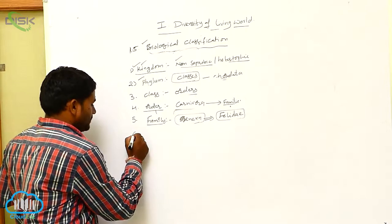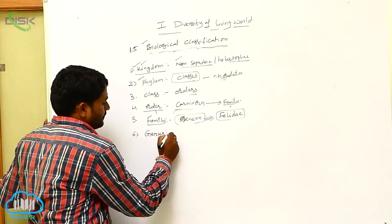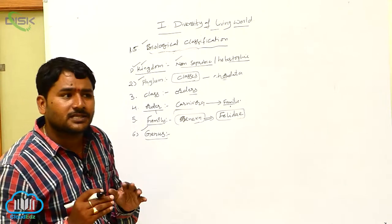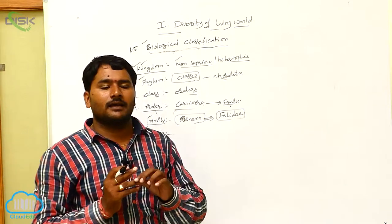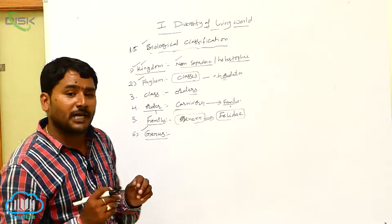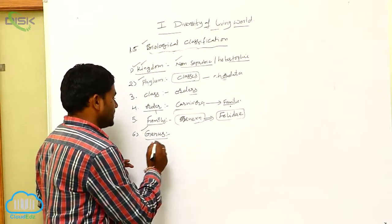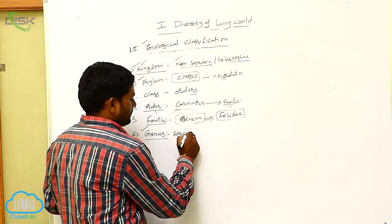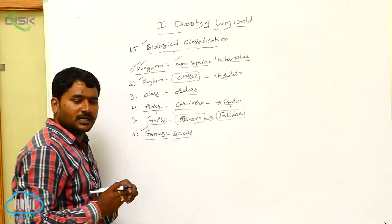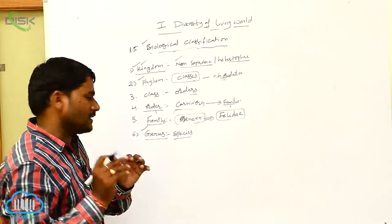Next thing is genus. Genus is an obligatory taxa. It is made up of one or more closely related species.